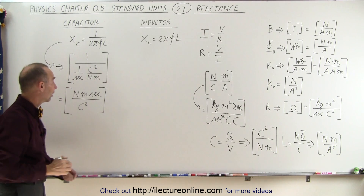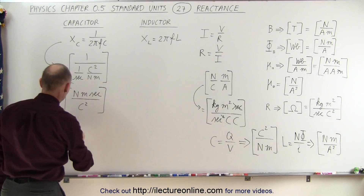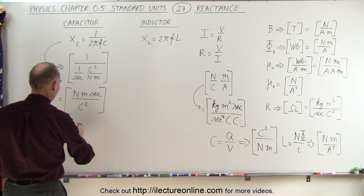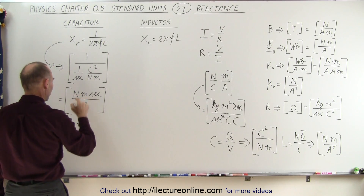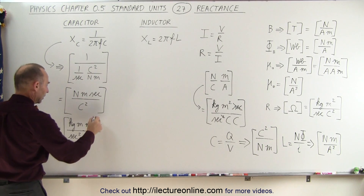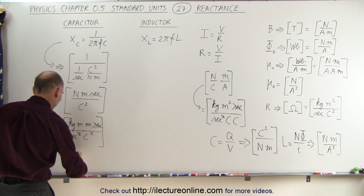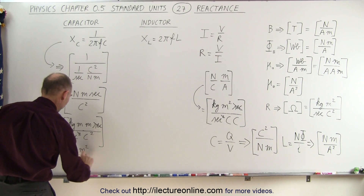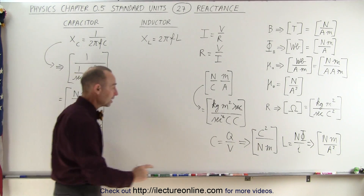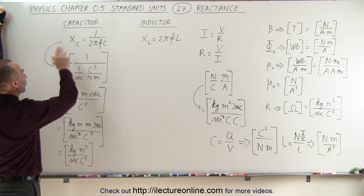Now converting newtons to kilograms meters per second squared, we have kilograms meters per second squared, times meters, times seconds, over coulomb squared. This second cancels that second, and when we simplify we get kilograms meters squared per second per coulomb squared — the exact same units we have for resistance, confirming that the units for capacitive reactance are indeed ohms.